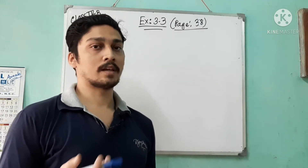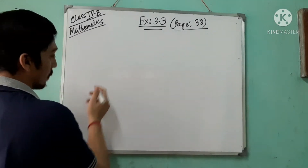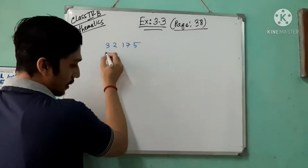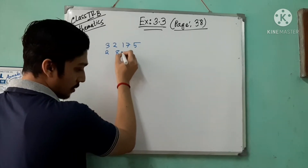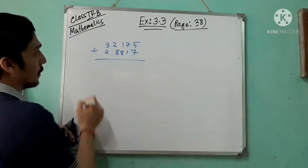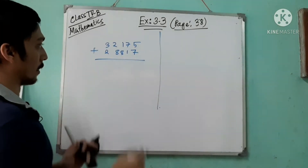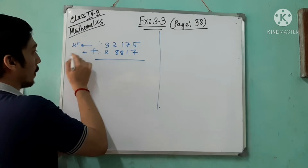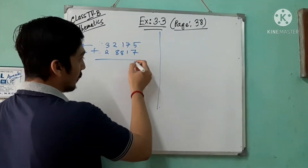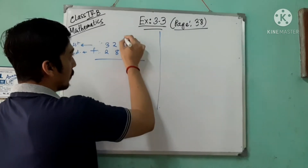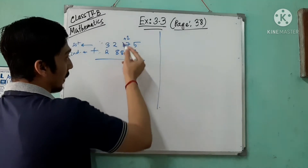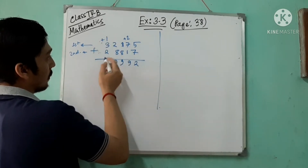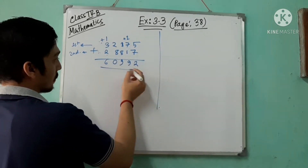What does it mean? If the order is changed, the sum remains the same. Suppose we have 32,175 and 28,817. This is the first number, this is the second number. Seven plus five is twelve, one plus seven is eight, eight plus one is nine, eight plus two is ten — write zero, carry one. Three plus two is five, five plus one is six.